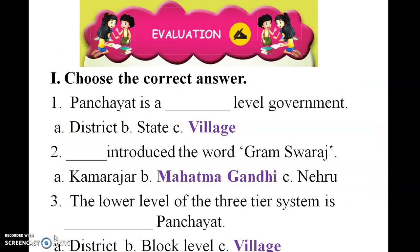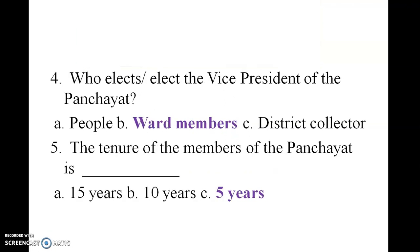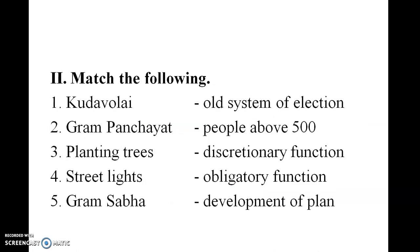Now let us see the book exercises. Choose the correct answer: Panchayat is a village level government. Mahatma Gandhi introduced the word 'gram swaraj'. The lower level of the three-tier system is village panchayat. The vice president of the panchayat is elected by the ward members. The tenure of the members of the panchayat is five years.